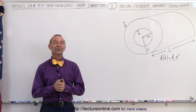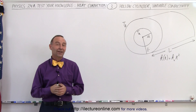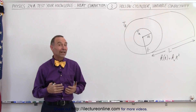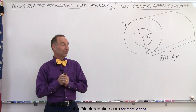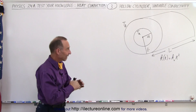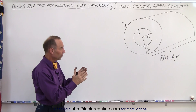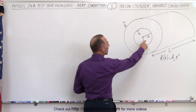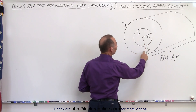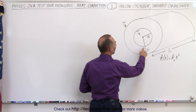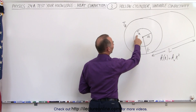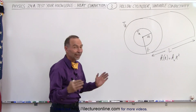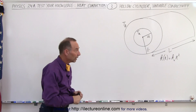Welcome to our lecture online. Our next example is quite interesting. We have a cylinder that has an inner radius of A and an outer radius of B, a temperature inside at A and a temperature outside at B, with a length L.